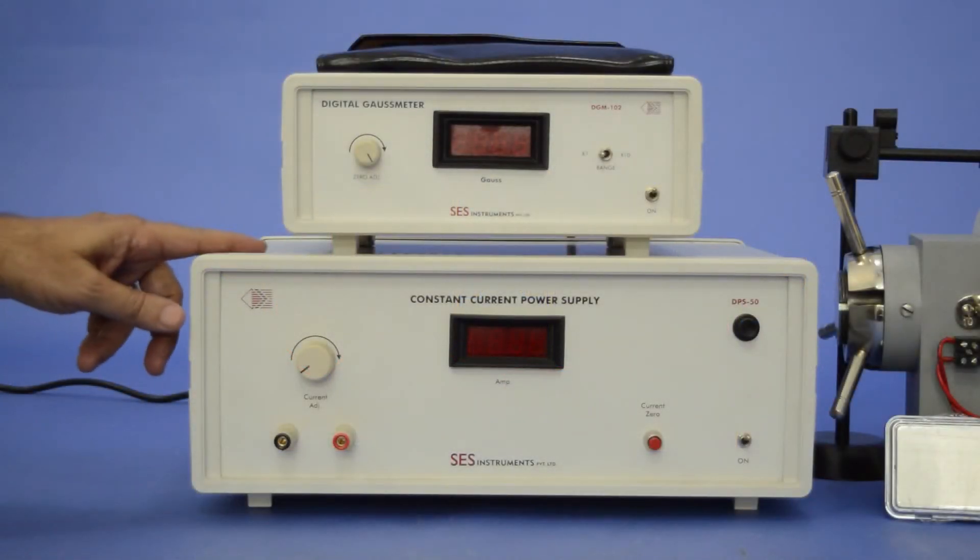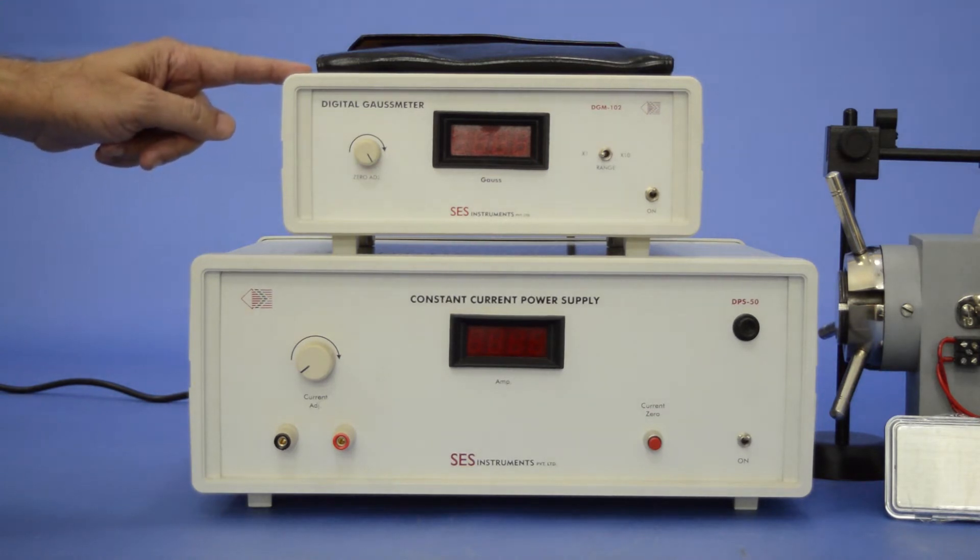Constant current power supply, DPS 50, its current range is up to 4 Ampere. A digital gauss meter DGM-102 can measure from 1 gauss to 20 kilogauss in two ranges.